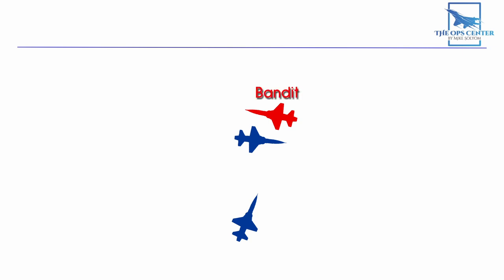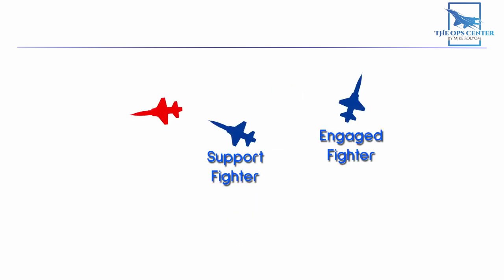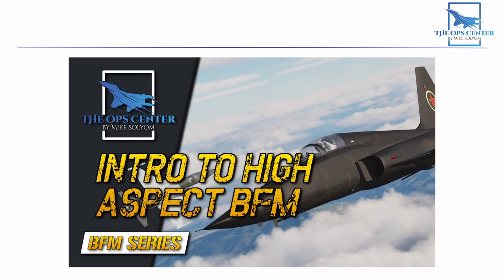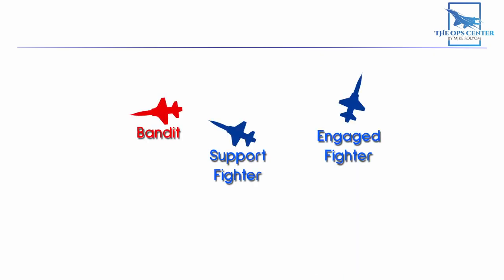Now, if Eagle-2 was maneuvering into the bandit's control zone in anticipation of a VID hostile call, then he would be in a position for a shot right away. That's one of the support fighter's responsibilities. You may be wondering, how should I maneuver for the shot? The best way to do that is to follow the steps for a lead turn that we covered in this video. In this case, the bandit is treated as unaware since he's reacting to the engaged fighter, which leaves a support fighter free to maneuver on him. But we have one additional caveat to think about now.